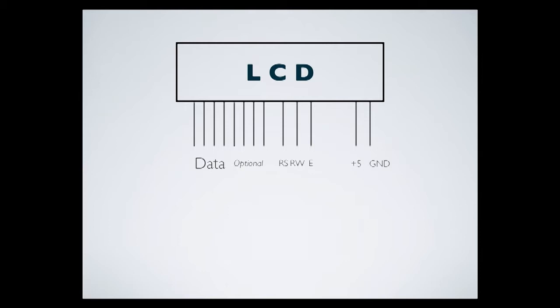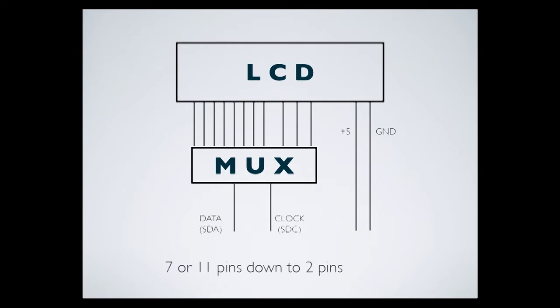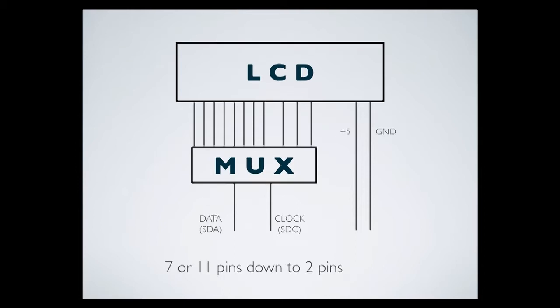With the serial LCD, they add what I'll call a MUX — a multiplexer — with pins going to the LCD. It talks to the Arduino using just two pins: the data pin and the clock pin. You still need 5V and ground, but those don't use I/O pins. That takes the seven or eleven pins of the parallel LCD we used last week down to just two, freeing up a ton of pins.